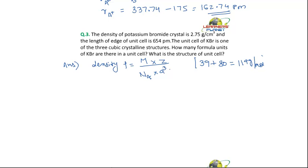Your Z is equal to the density which is 2.75 multiplied by the Avogadro number that is 6.023 into 10 to the power 23 multiplied by a cube.